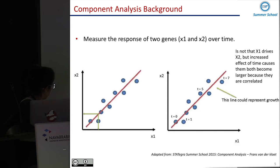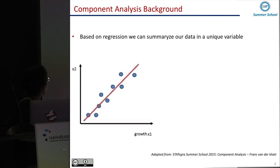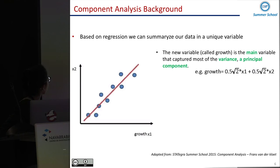So we can explain the expression of both genes using a new variable. It's a combination of these two genes and we have the growth. So we perform the regression, and then the variable is called growth. It's the main variable of our data that captures most of the variability and it's what we know as a principal component.